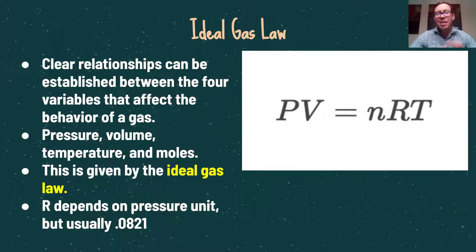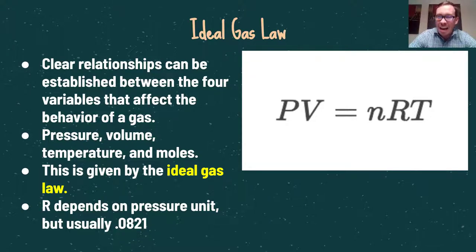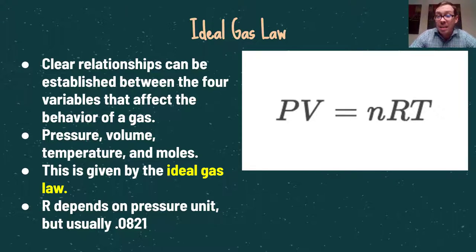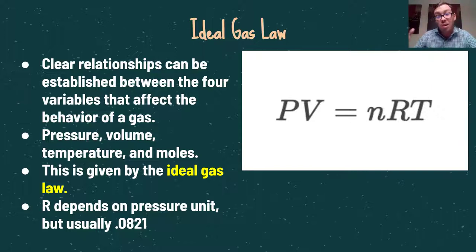Clear relationships can be established between the four variables that affect the behavior of a gas: pressure, volume, temperature, and moles. These relationships are given by the ideal gas law — pressure times volume equals moles times the ideal gas constant times temperature, or PV = nRT. Remember that R is typically 0.0821, and your temperature must be in Kelvin. Problems may give you temperature in Celsius, pressure in non-standard units, or volume in milliliters that you'll need to convert to liters.